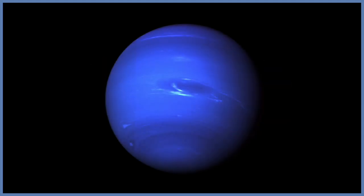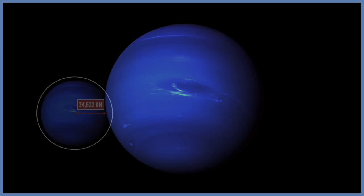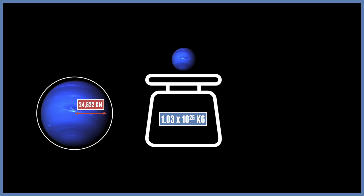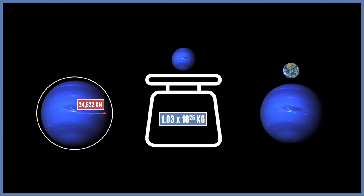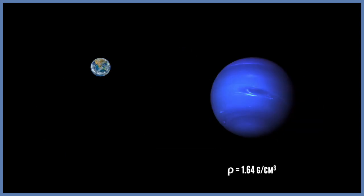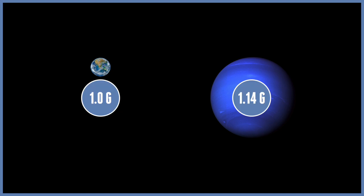Finally, we come to the furthest planet from the Sun, Neptune. At just under 25,000 kilometres, it's the fourth largest planet, with a mass of 1.03 times 10 to the 26 kilograms — a very similar size to Uranus in mass, size, and density. However, it does have a higher gravity at 11.15 metres per second squared, meaning it actually exceeds Earth's gravity at 1.14g.